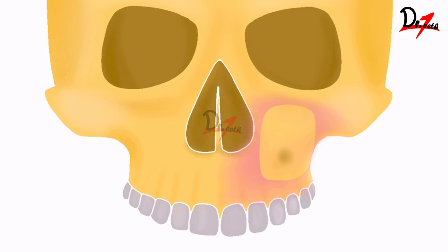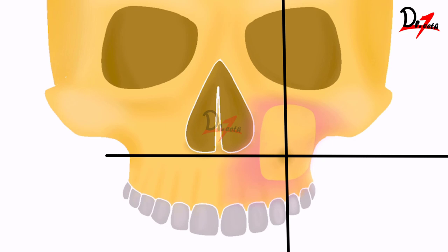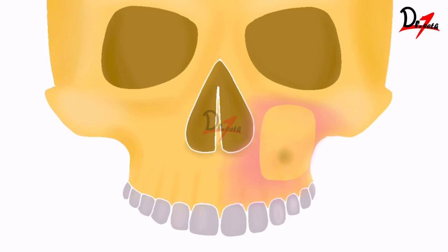As you can see here, we have a depression — that is the canine fossa. To locate the canine fossa, we make a line from the center of the eyelid and from the ala of the nose, and where these two bisect, that is the position of the canine fossa. We will then take chisels or dental drills and drill small holes in this area.